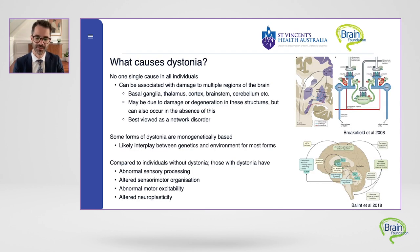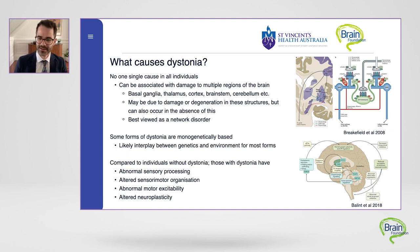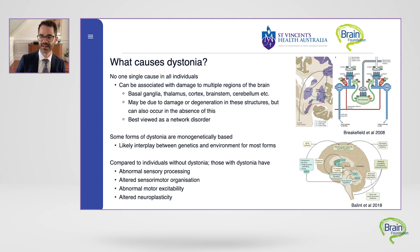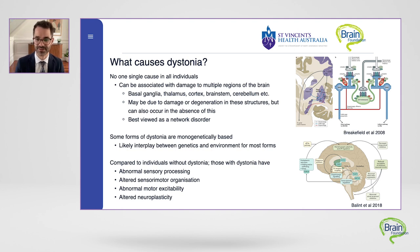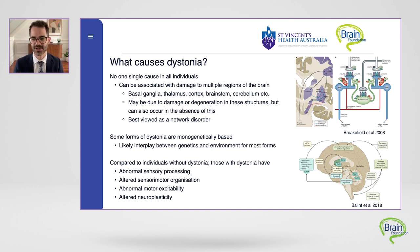The next logical question is: what causes dystonia? There really isn't one simple answer, but what we know is that dystonia can be associated with damage to or degeneration of multiple regions of the brain. This includes the basal ganglia, the thalamus, the cortex, the brainstem, and the cerebellum. However, dystonia can also occur in the absence of clear cell damage or degeneration.